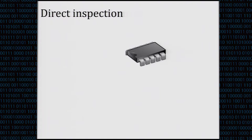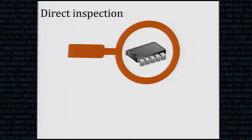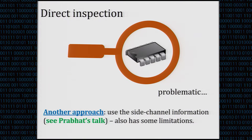A natural countermeasure is direct inspection — once you get your chip back from the factory, you analyze if everything is okay. This is problematic: it's often destructive, takes a lot of money, and is hard to perform in real life. There are other methods, like using side channel information in a positive way, as mentioned in the previous talk, but that also has limitations — you need to be able to measure the side channels and it doesn't always work.